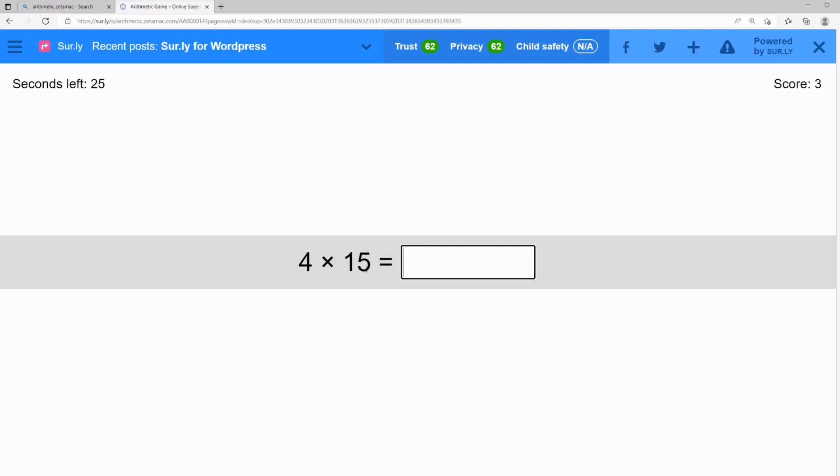What's 4 times 15? 15 is 10 plus 5. 10 times 4 is 40. And we multiply the last digit. 5 times 4 is 20. What's 40 plus 20? It's 60. This is good practice.